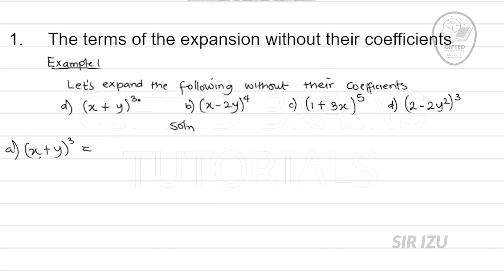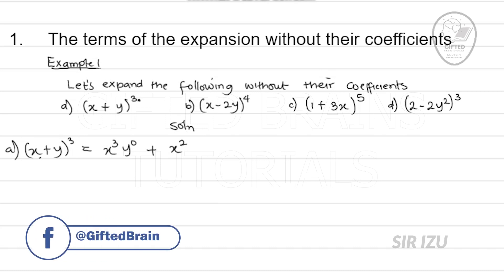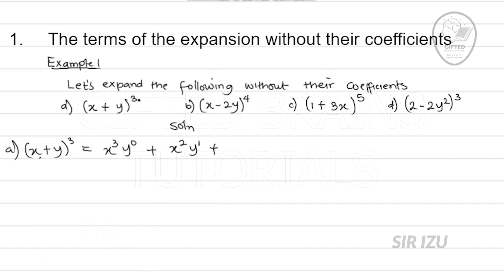We take the first term x and raise it to the power n, which is 3, and give the second term y a power of zero. The next term: x raised to power 2 — note the power of x decreases by 1 — and y increases by 1, so it becomes y to power 1. Then x to power 1 and y to power 2. Finally, x to power 0 and y to power 3. That's how to get the terms.